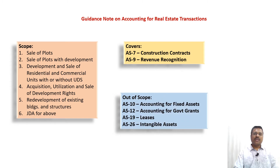What is out of scope of this guidance note? Accounting Standard 10 - Accounting for Fixed Assets: if the contract is going to be a fixed asset of the entity then we should not follow this guidance note; AS 10 should be followed instead. Similarly, in case of government grants, leases, and intangible assets, this guidance note should not be used, and the respective accounting standards have to be adopted.